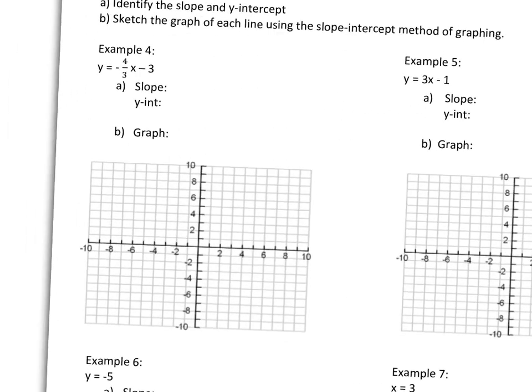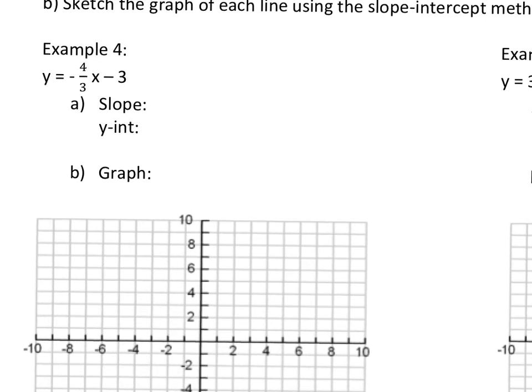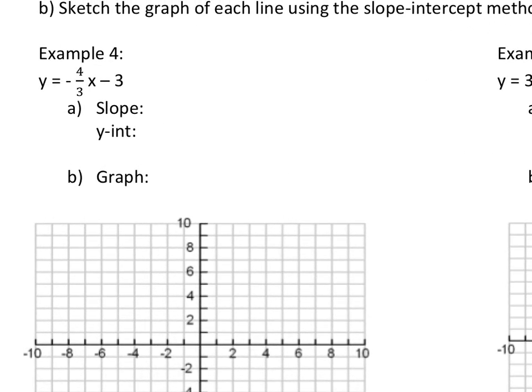We talked about where these numbers are that we have to pay close attention to. The y-intercept is negative 3. The slope is negative 4 thirds.